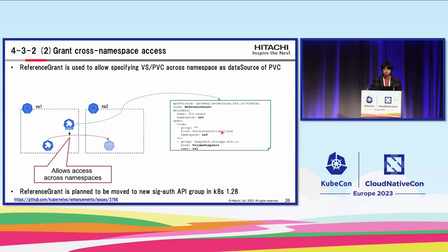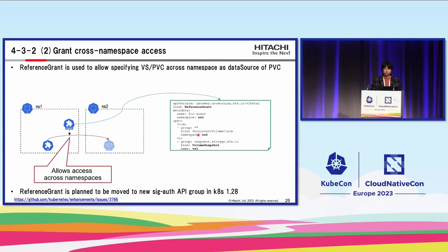In our use case, what we need to do is allow access from a PVC to a VS in another namespace. For example, to allow access from a PVC in NS2 to a VS in NS1, the VS owner creates a Reference Grant. In the Reference Grant, PersistentVolumeClaim should be set as the kind in the 'from' section, and VolumeSnapshot should be set as the kind in the 'to' section. To achieve this, we need to implement logic in the CSI provisioner to check if the access is granted by Reference Grant. Note that Reference Grant is planning to move to a new SIG-wide API group in Kubernetes 1.28 with some enhancements, as a cross-SIG work with Gateway API, SIG-Network, and SIG-Storage.